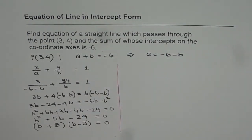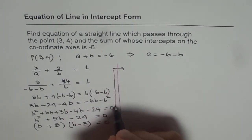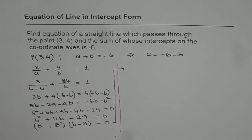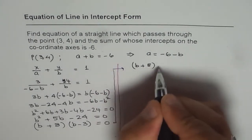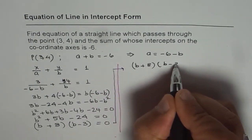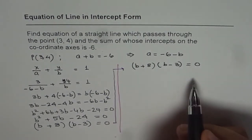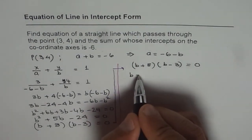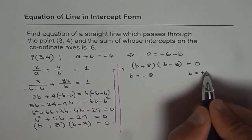From here, we can solve for b. We are moving from this place to the right side of the page. Let me rewrite the equation. We have (b + 8)(b - 3) = 0. That gives you two values of b. b could be equal to -8 or b could be equal to +3.